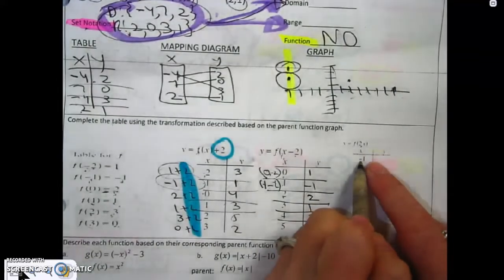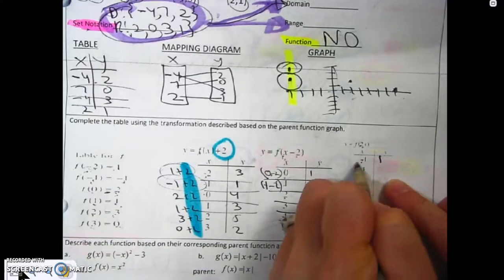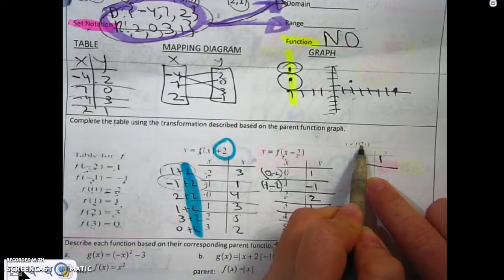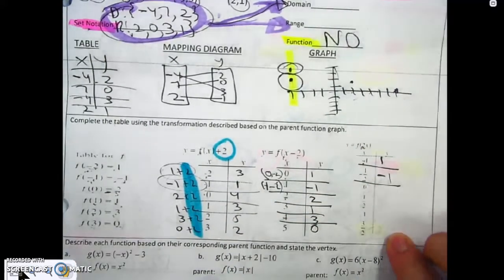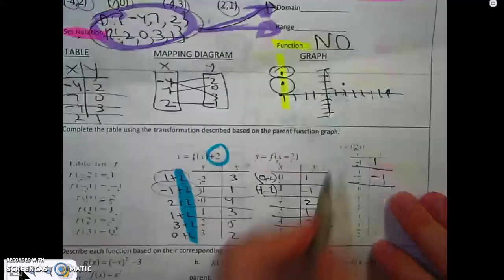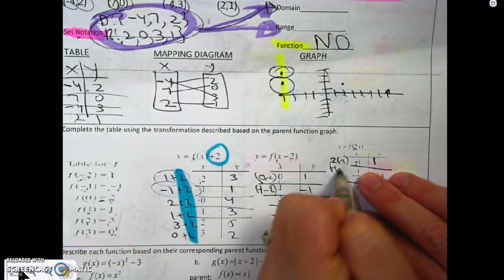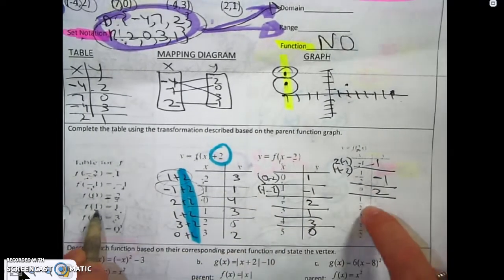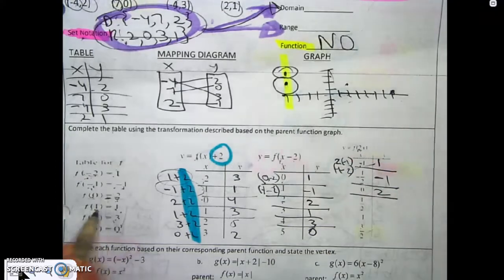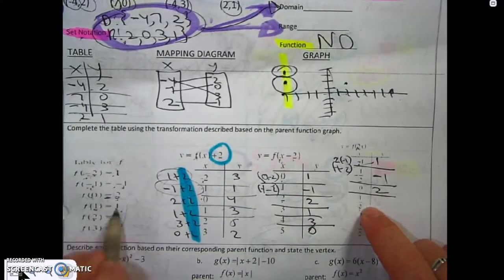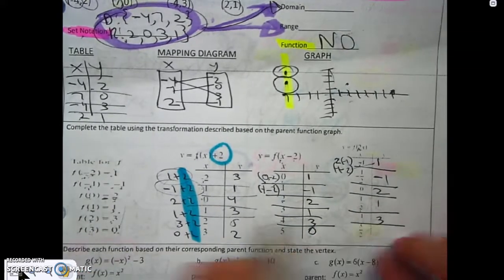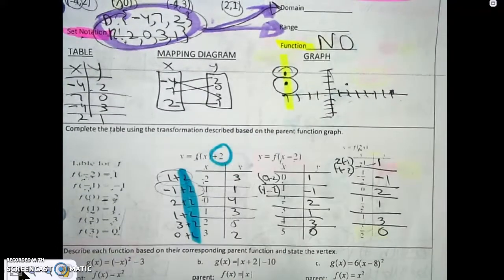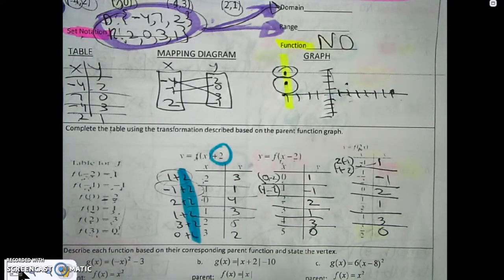For this one, we're affecting the x again — be careful. Take 2 times negative 1, which is negative 2, so f of negative 2 equals 1. Half of 2 is 1, so f of negative 1 equals negative 1. Show your work, because I need to see that you know it's really f of negative 2. Half of 0 is 0, so there's 2. Half of 2 is 1, giving 1. 2 times 1 is 2, giving 3. And 3 halves of 2 is 3, giving 0. Make sure you show work — if I just see y-values, I'll think you copied and you won't get full credit.